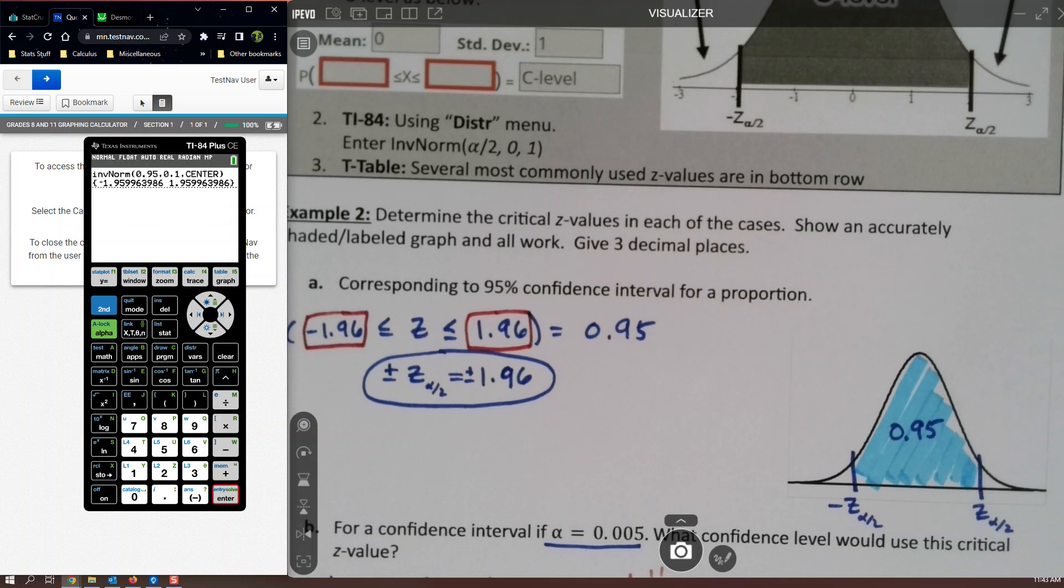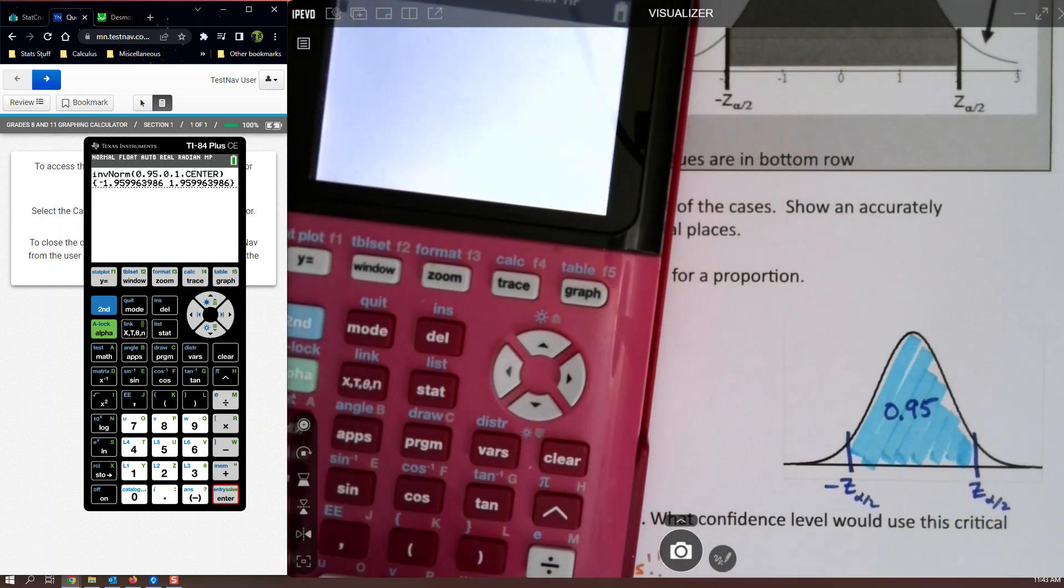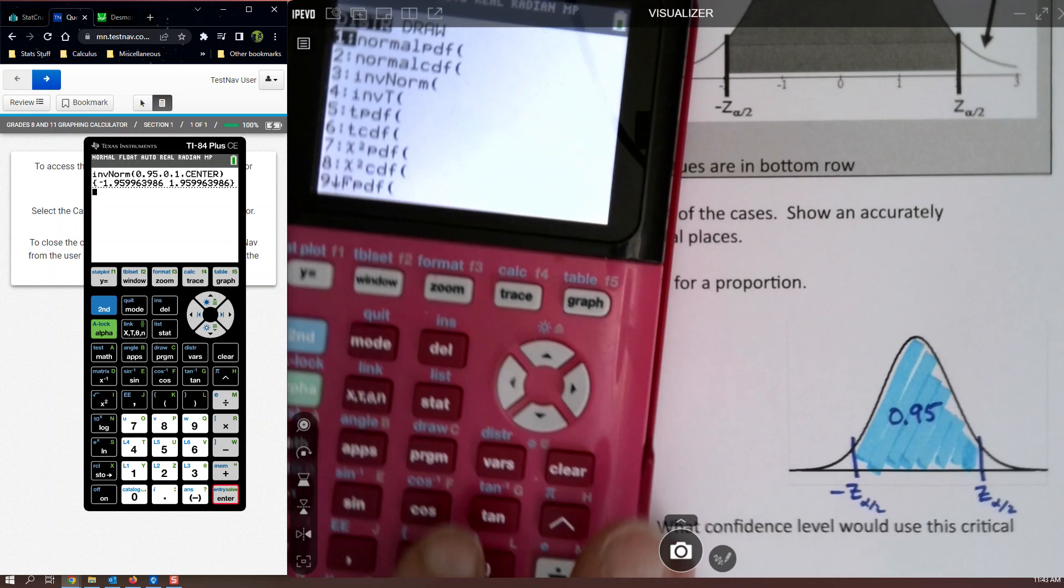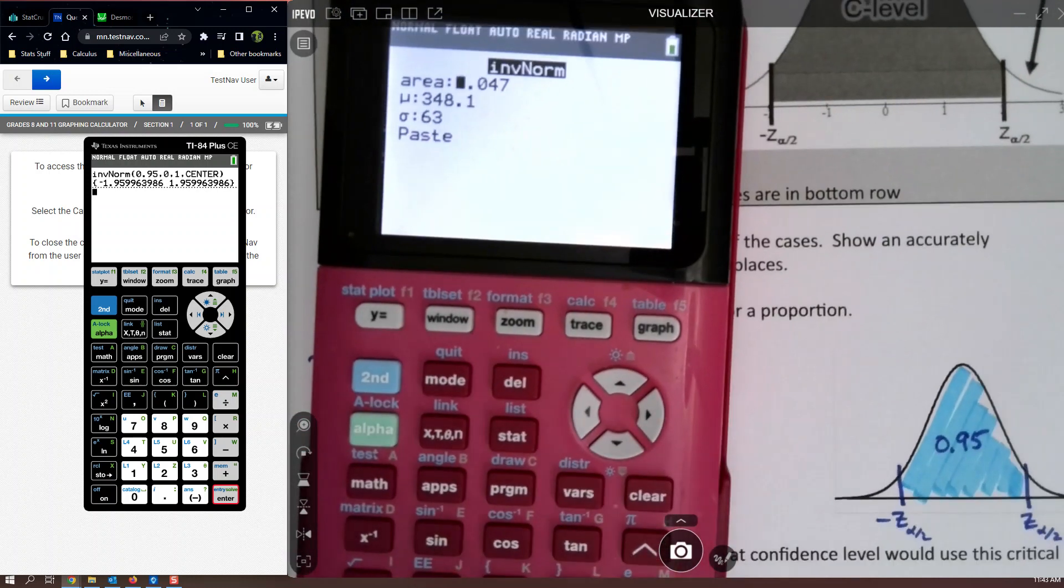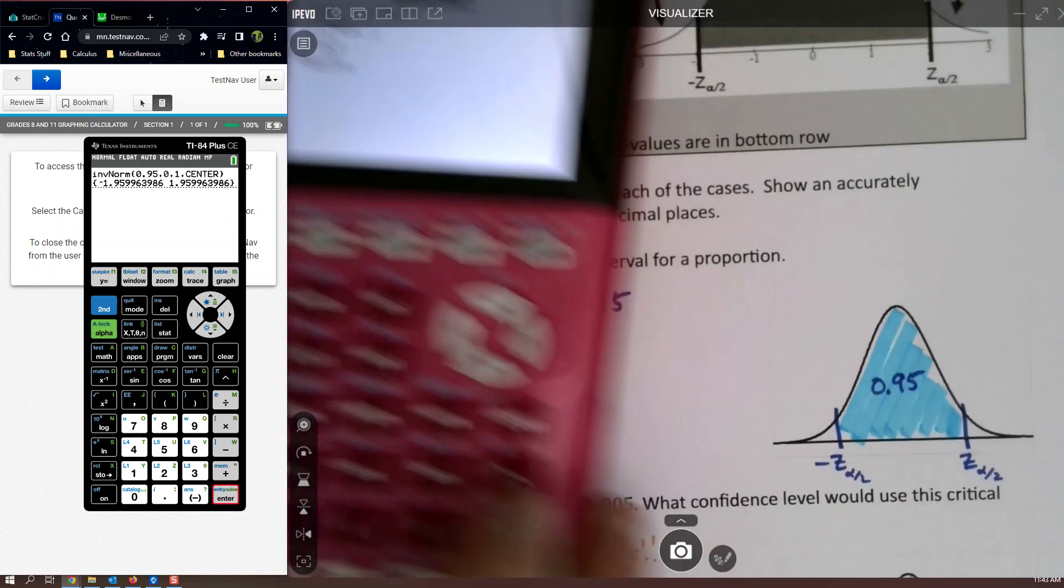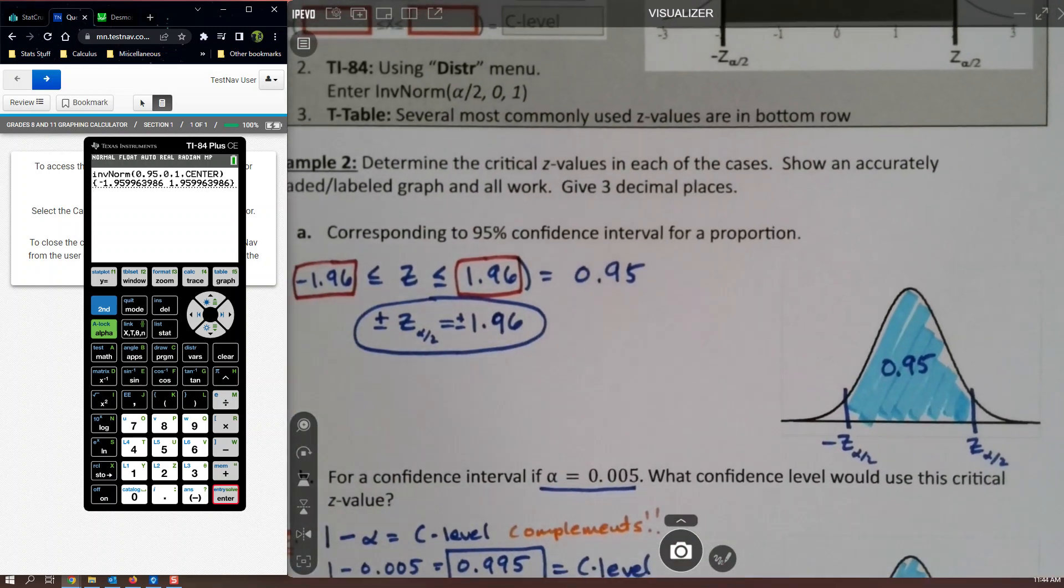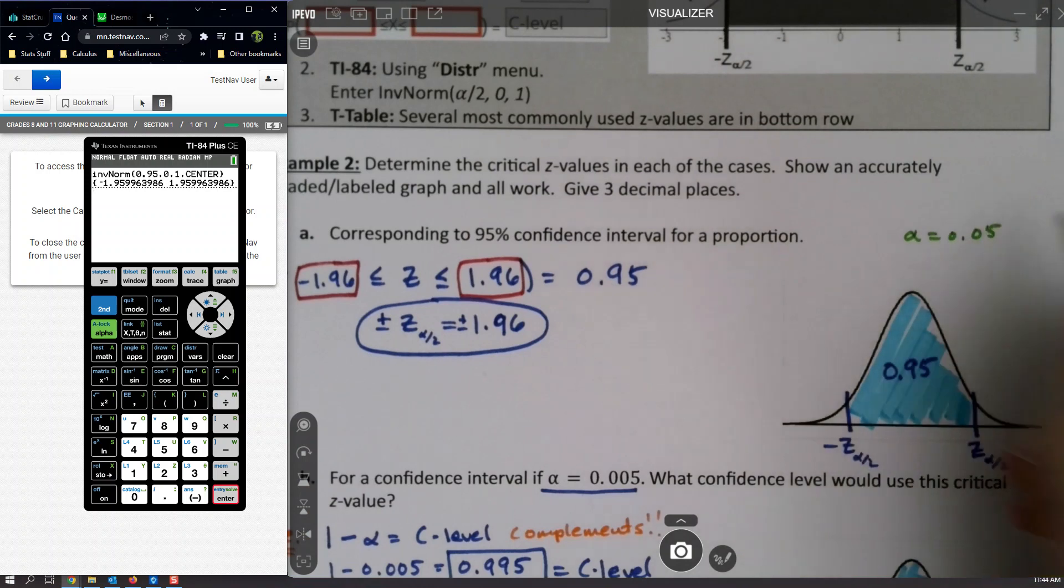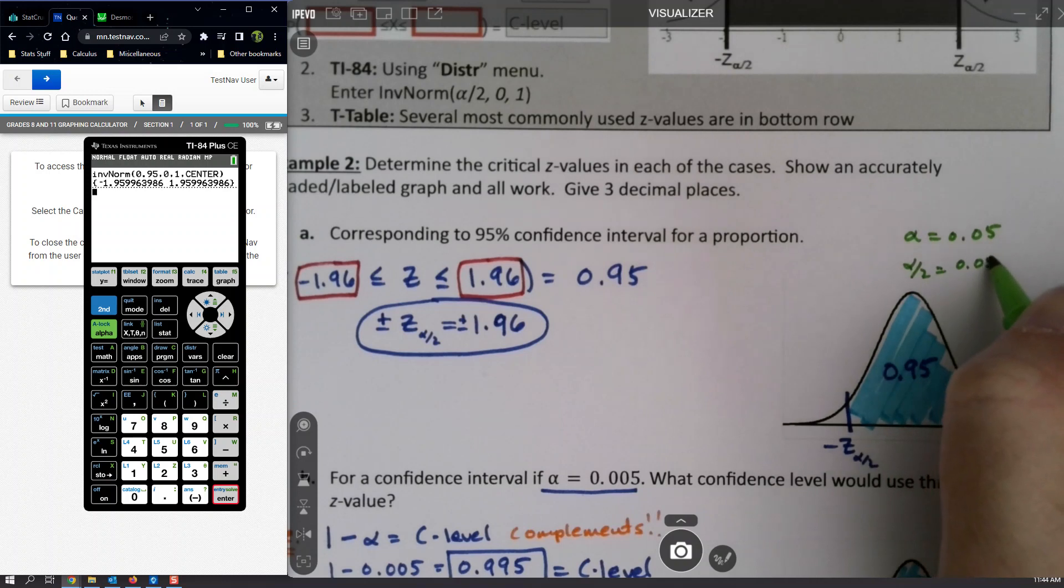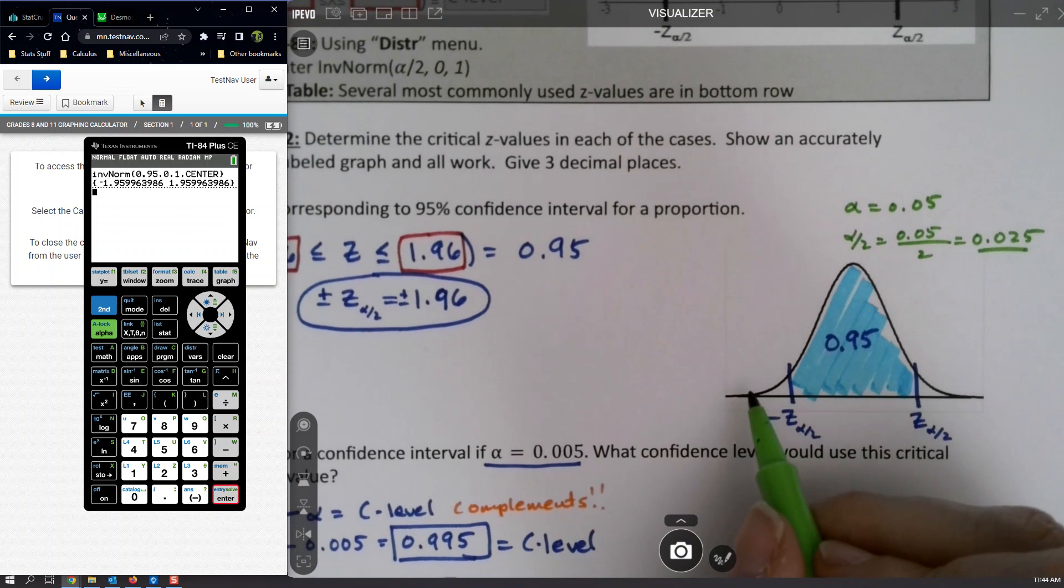The problem is if you have an old calculator. So, if you have an old calculator, you have to use inverse norm. And then you have to tell it the area in the tail. But only the tail over here. It can't be both tails. So, you have to figure out that this area in this tail. Here, I'll just do it in green. Alpha must have been 0.05 because the c-level is 0.95. So, alpha over 2 is 0.05 over 2, which is 0.025. And so, that's what this tail is right here.